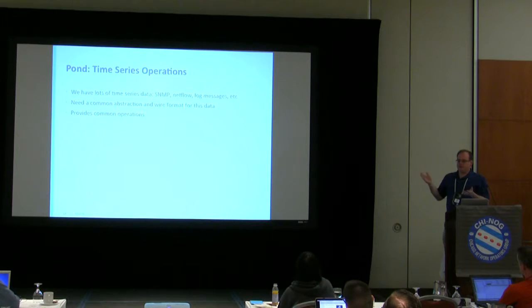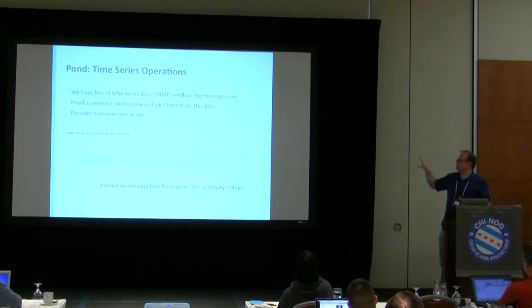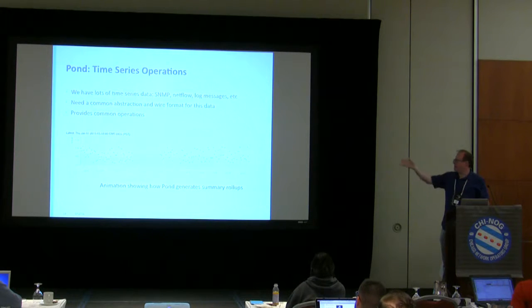There's a third library that undergirds all of this, which we call Pond. It's basically an abstraction over time series data. As we were writing this software, we kept rewriting the same little loop to adjust the time series — for example, multiplying octets by eight to get bits per second rather than bytes per second. We found a lot of these things we were doing over and over, so having a library to express ideas about time series was helpful. We can take raw data in 30-second samples and bin it into specific time granularities, like five-minute bins. This animation was all generated by driving data through the time series charting library using Pond.